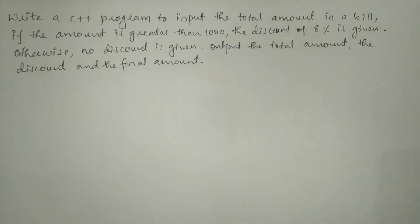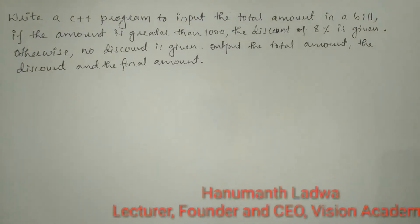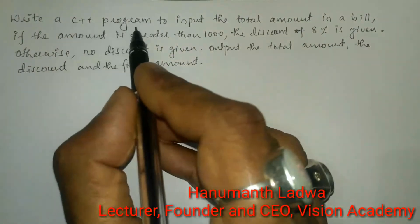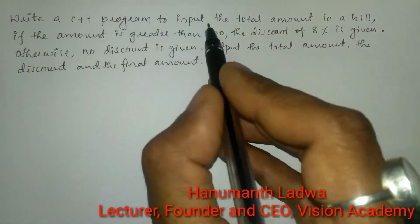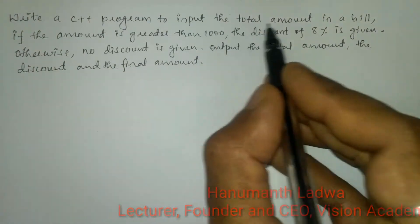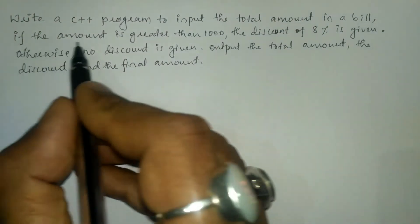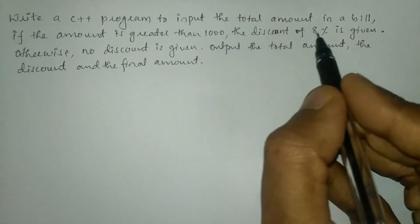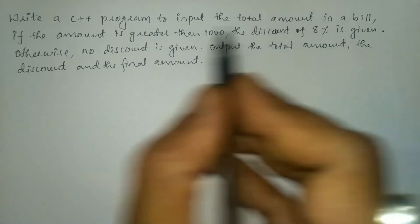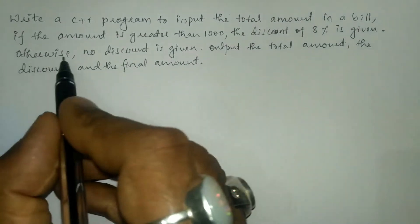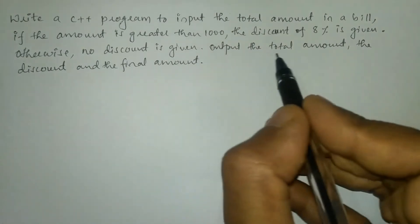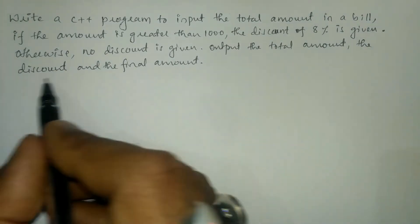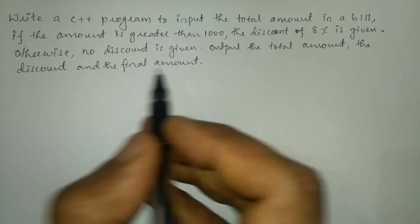Hello and welcome to Vision Academy. My name is Hanman Ladwa and in this video we are going to write a C++ program to input the total amount in a bill. If the amount is greater than 1000, a discount of 8% is given; otherwise no discount is given. We will output the total amount, the discount, and the final amount.